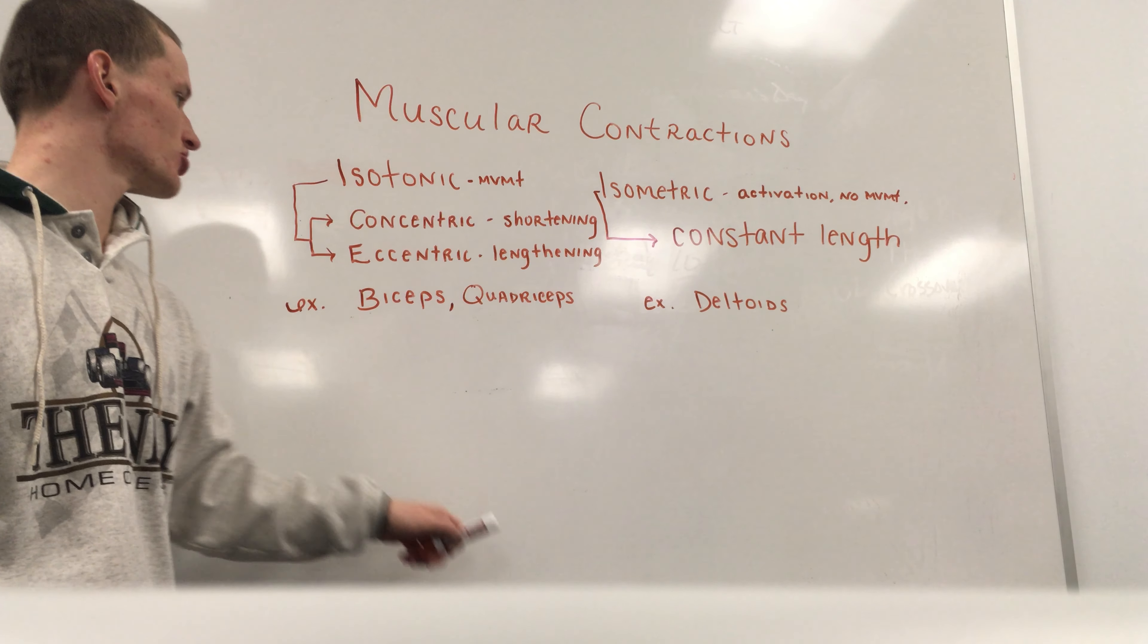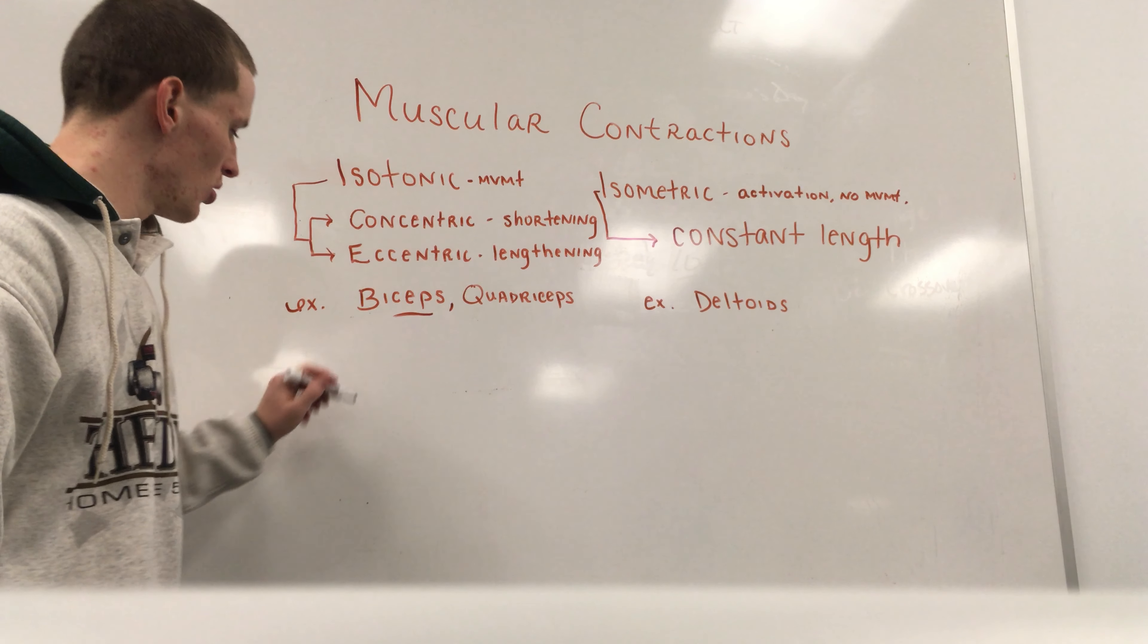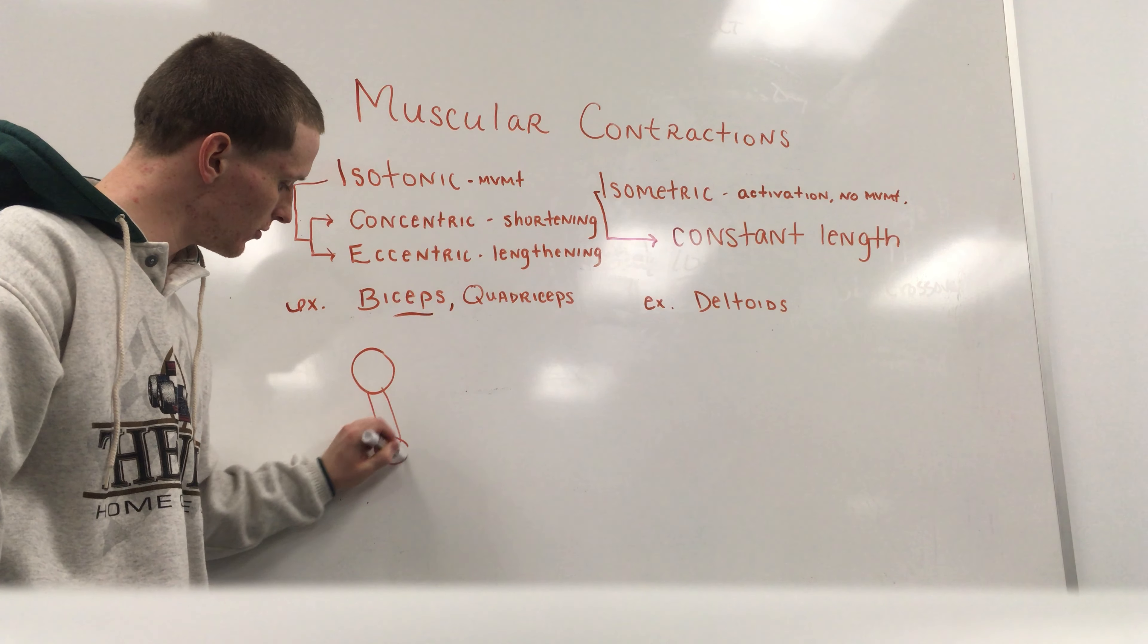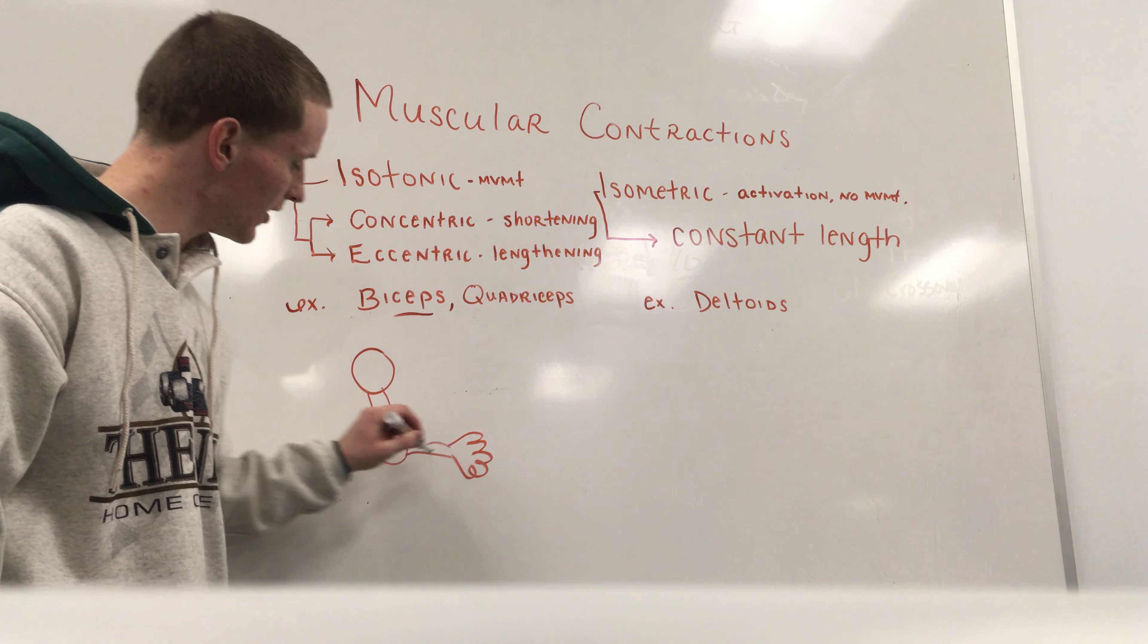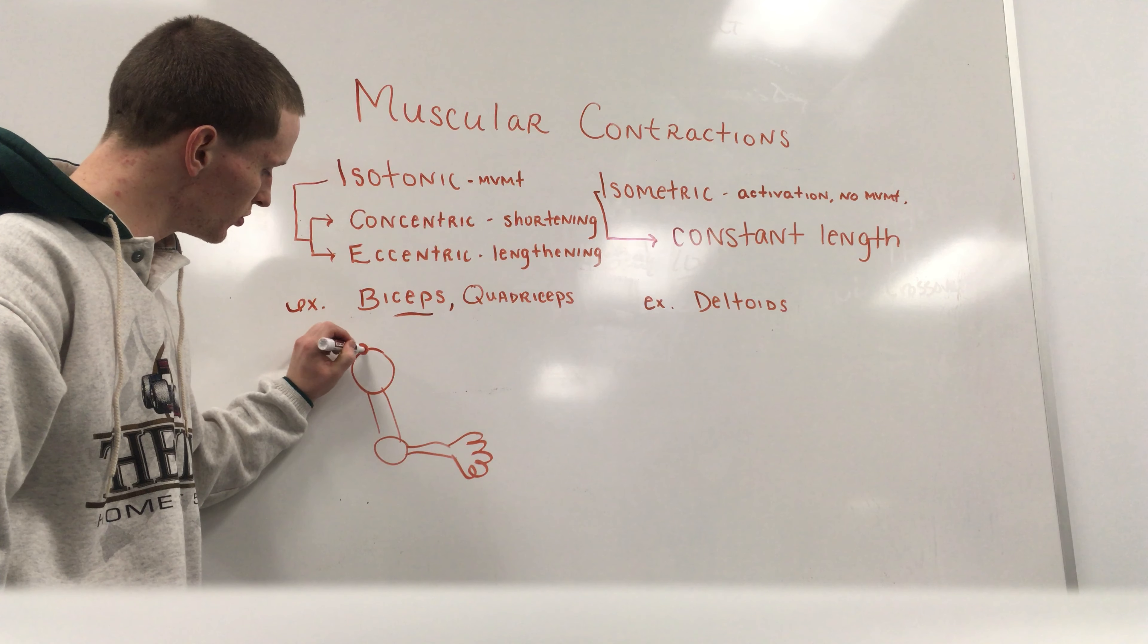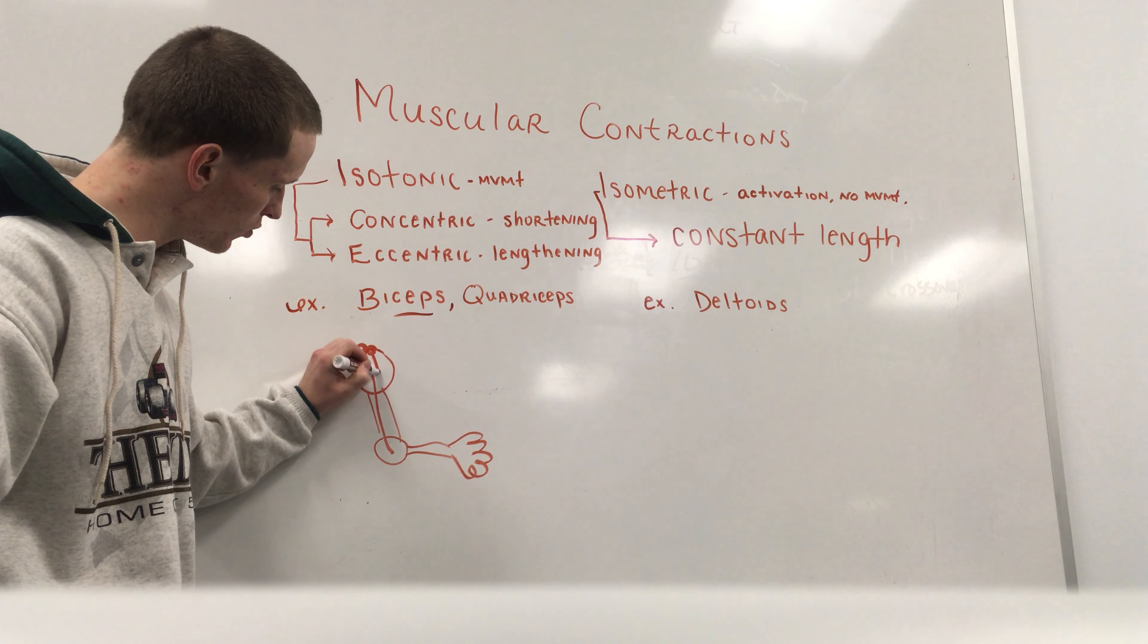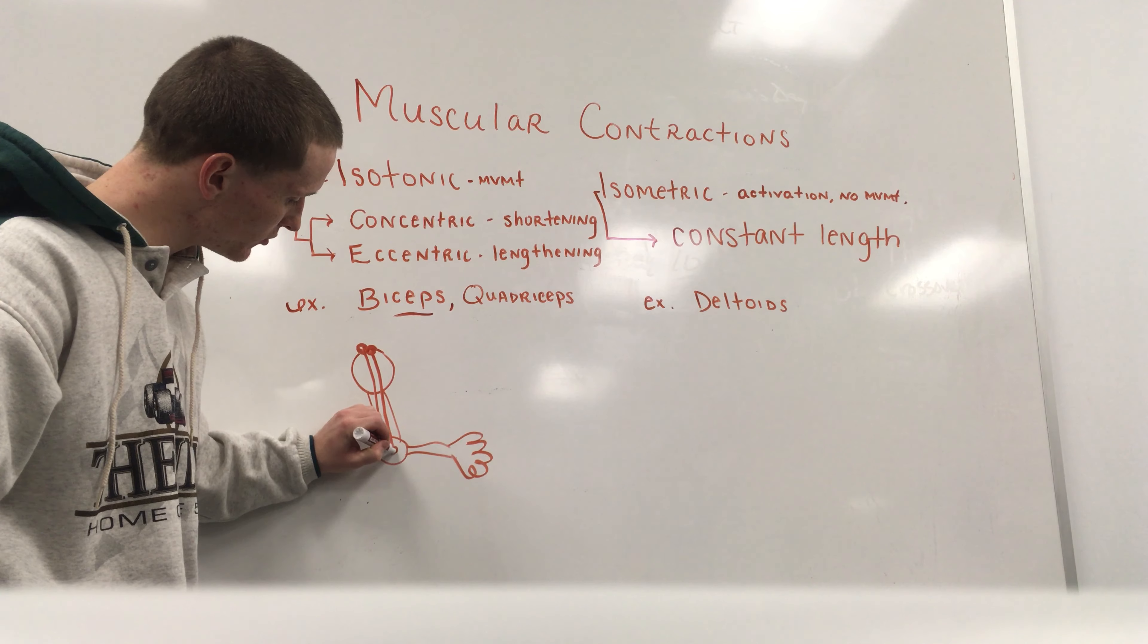And to understand concentric and eccentric, I got a little example with the biceps. So we're here at the shoulder, humerus, elbow, forearm, hand, and biceps going from that supraglenoid tubercle down to that radius, and also that coracoid process down to that bicipital aponeurosis.